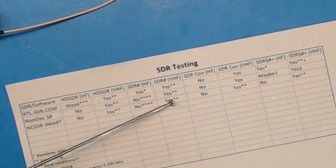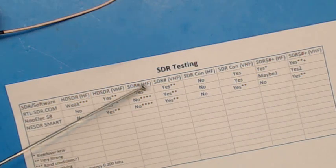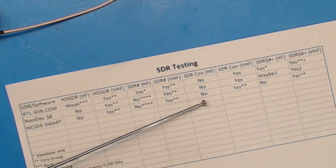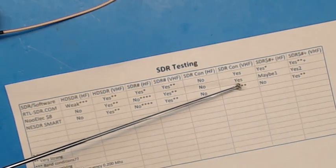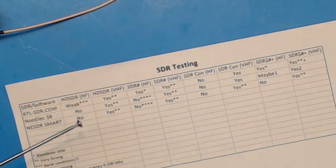VHF under SDR-Sharp worked fine. SDR-Console, nothing. SDR-Console on VHF worked fine, strong signals.